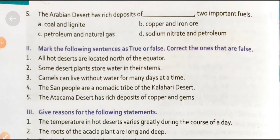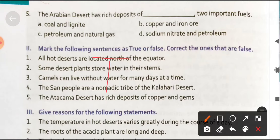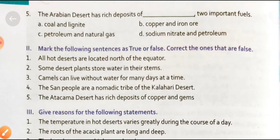Next statement: 'The San people are a nomadic tribe of the Kalahari desert.' In the Kalahari desert the nomadic people are called San, so this statement is true. Next statement: 'The Atacama desert has rich deposits of copper and gems.' This statement is false, because it is the Australian desert and the Arabian desert that are rich in deposits of copper, borax, and petroleum or natural gas.